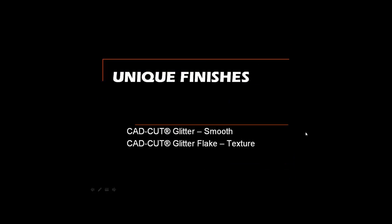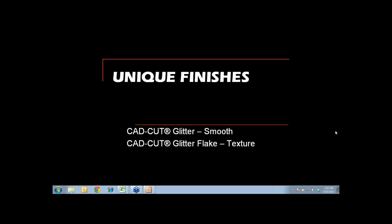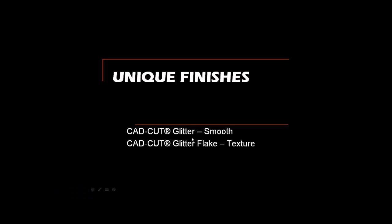That's a highlight tour of the various core finish materials and what you can accomplish with heat transfer films. Now let's talk about some unique finishes you can create with the vinyl cutter and heat press, and take a tour through some of the special effect materials. In the glitter category, there are two types: standard glitter, which is a smooth-finish glitter, and glitter flake, which is a high-density textured glitter.